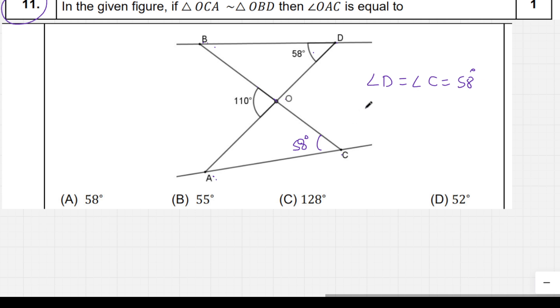So we can find angle AOC. Angle AOC plus 110 equals 180, which means angle AOC equals 70 degrees.